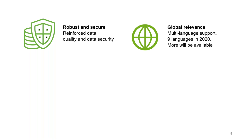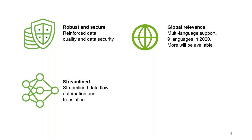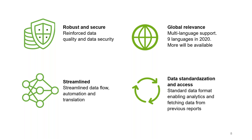Regarding global relevance, we use multi-language support — at the moment we have nine different languages in 2020 and more will be available. These languages cover 90% of the global FSC certified area and 80% of the number of certificates. We have streamlined data flow automation and translation — data only needs to be input once, with no double entry. Data can be shared with stakeholders and we can provide API to CBs, for example to monitor non-conformities. We use standard data formats to enable analytics and fetch data from previous reports, allowing aligned consistent data for insights from the FSC system.